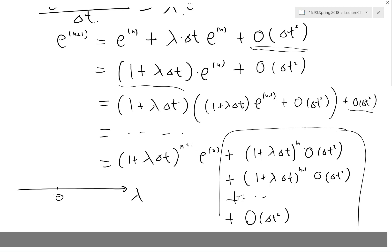Which means lambda times delta t has to be less than one. It has to be between negative two and zero, right? Which means lambda has to be between negative two over delta t and zero.